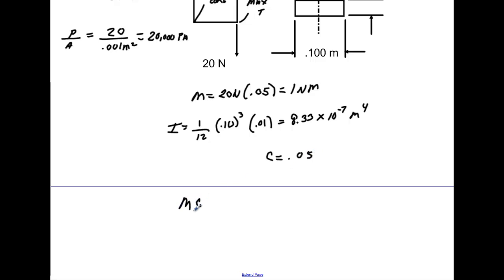So, our mc over i, here, would equal to our moment again would be 1, times your c value of 0.05. We'll divide that by our moment inertia, which is going to be 8.33 times 10 to the minus 7th. Let's run that number real quick. That gives me 60,000 Pascals.